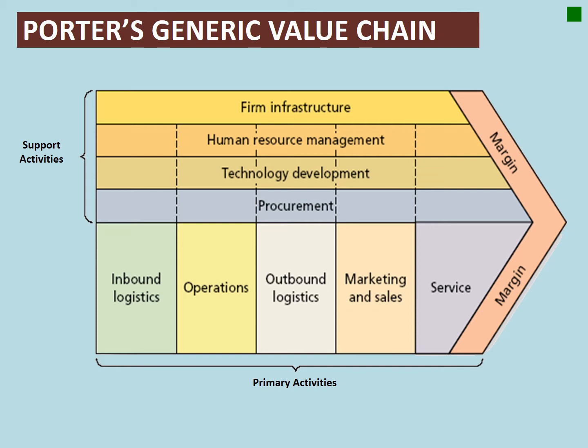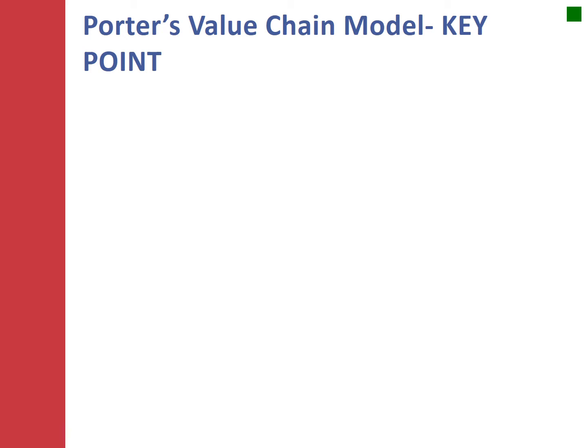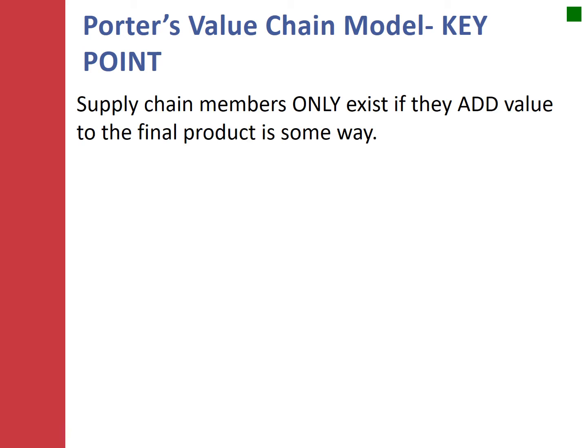Porter's value chain model is important because it describes the idea that everybody who plays a role in bringing the product to market does something to create some dollar amount or some value to the end user. The margin we see at the very end is what's created as a result of the coordinated efforts of a lot of different firms doing these activities. Members within the supply chain only exist in the value chain if they add value to the final product in some way.